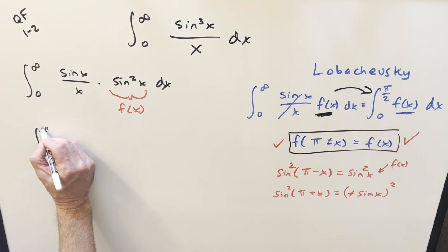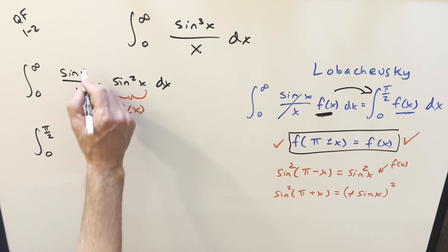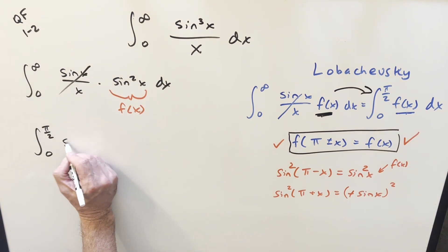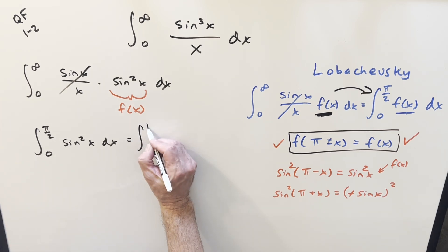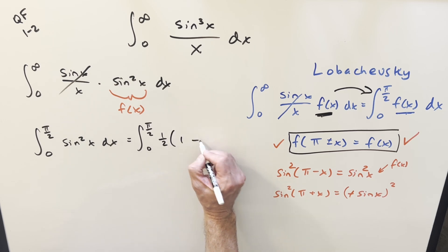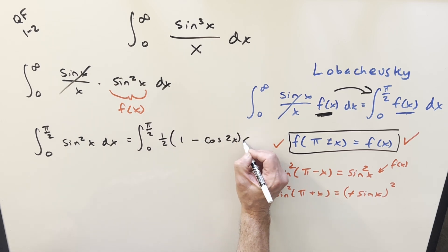So what's going to happen is this now, we change our bounds. We're going from 0 to pi over 2. This goes away. And now we're just integrating sine squared x dx. But then I can use power reduction on this. We're going same bounds. We can write this as 1 half 1 minus cosine 2x dx.